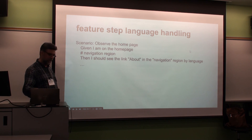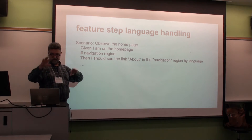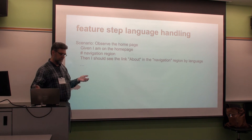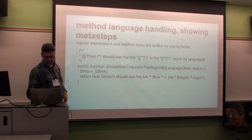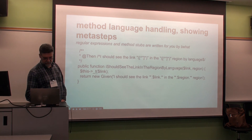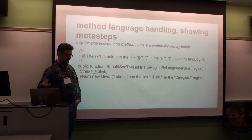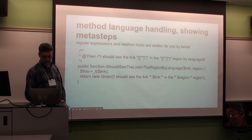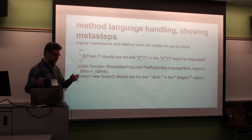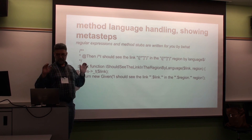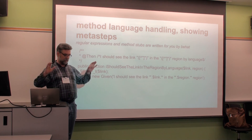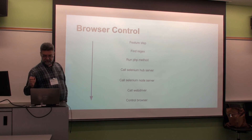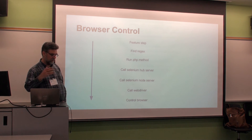Here's another example: 'Then I should see the above link in the navigation region by language.' We have a site with a couple of languages — language comes up quite a lot. 'By language' is a very natural way to express this. You can reuse the same test for different languages: in the underlying code you develop a little translation routine, translate the particular string, then run something called a meta step — which is an existing step but this time inserting the actual translated values. Very straightforward, and yet big bang for the buck because you're getting different language websites tested for essentially the same code.